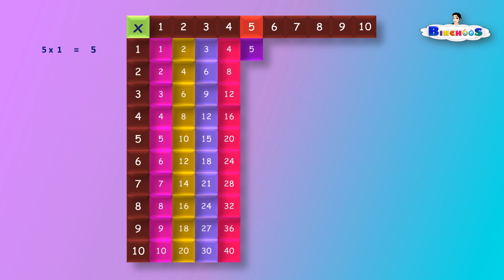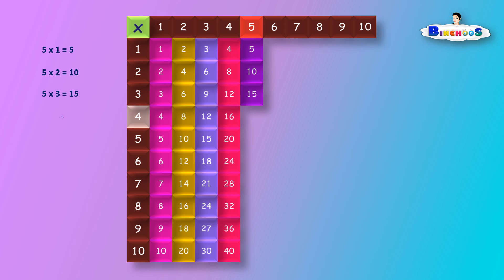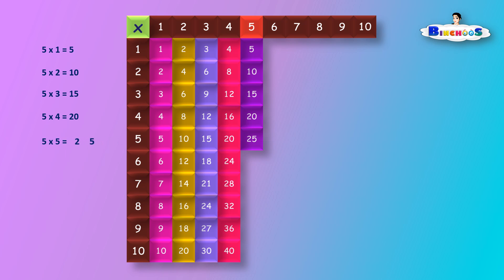5 times 1 is equal to 5. 5 times 2 is equal to 10. 5 times 3 is equal to 15. 5 times 4 is equal to 20. 5 times 5 is equal to 25.